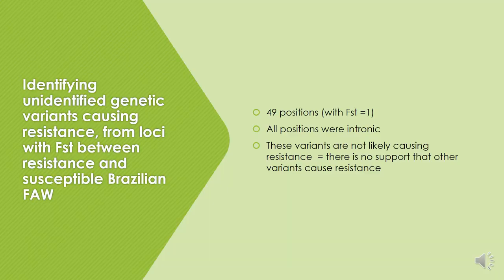As an unidentified genetic mutation causing BT resistance might exist, we investigated sequences with complete genetic differentiation between resistant and susceptible Brazilian individuals. In total, 49 single nucleotide polymorphisms had complete genetic differentiation with an FST equal to 1, and all these positions were found to be intronic. This result shows that other causal mutations are unlikely to exist in the tested individuals.